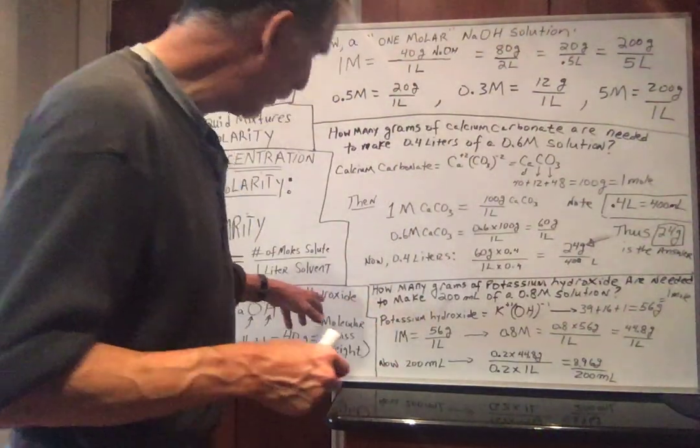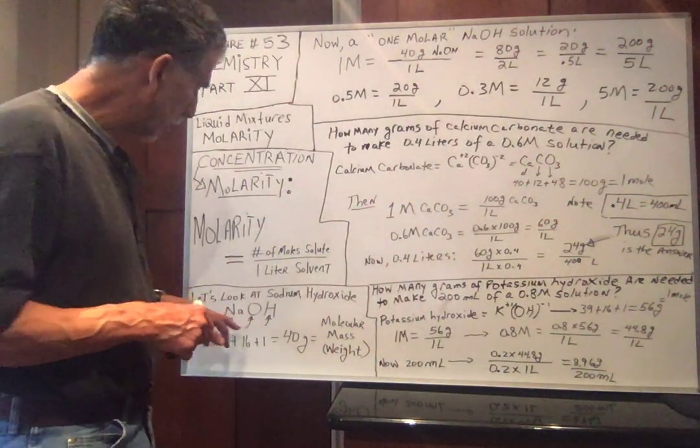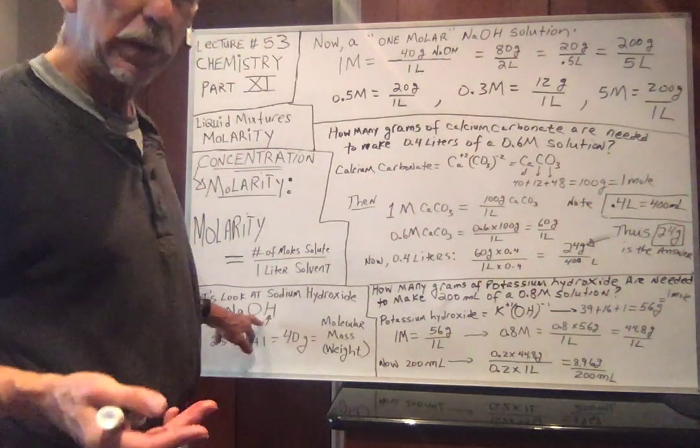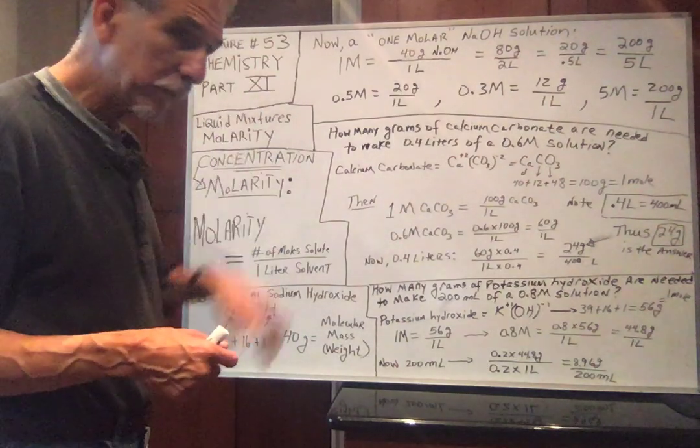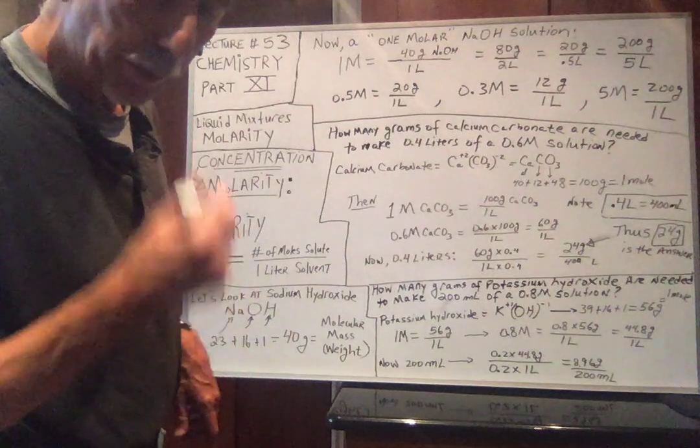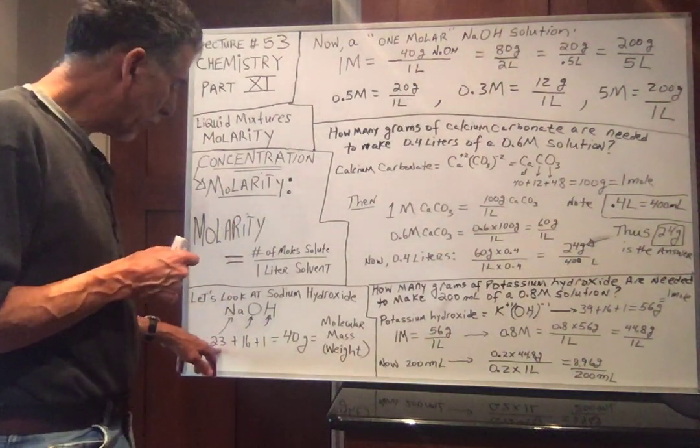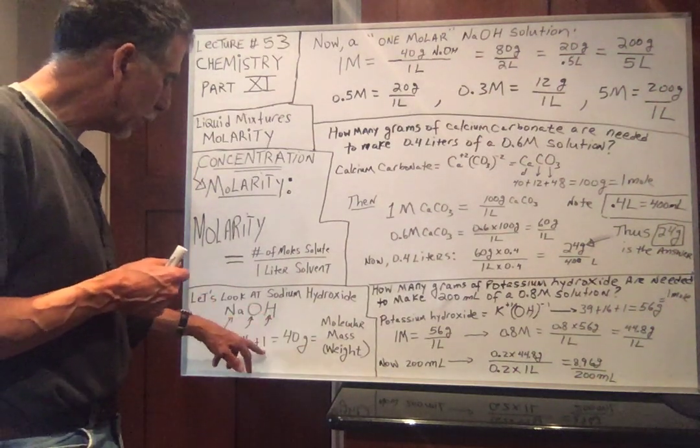I picked an easy compound, sodium hydroxide, NaOH. Sodium is plus one, group 1A. The hydroxide ion is minus one, so we need one sodium with one hydroxide polyatomic ion. Periodic table, remember, must have your periodic table. If we look up sodium, sodium has a mass of 23 atomic mass units, oxygen 16, hydrogen 1.